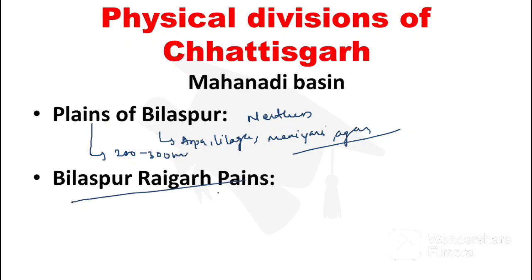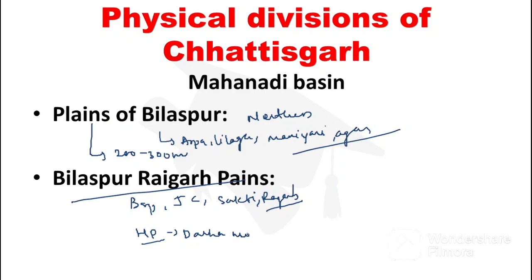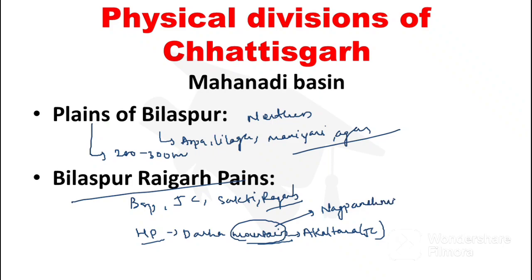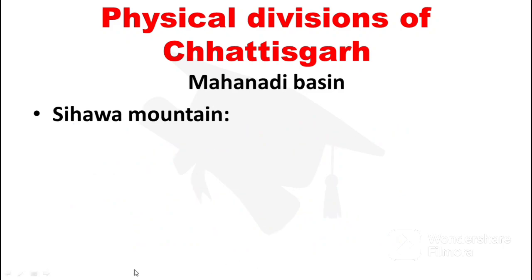Next, Bilaspur-Raigarh Plain covers Bilaspur, Changeur, Champa, Sakti, and Raigarh districts. The highest peak here is Dalha Mountain. Dalha Mountain is located in Akaltara, which is a town in Janjgir-Champa district. This question has been asked in previous year exams. Dalha Mountain is famous for Naag Panchami Mela celebrated here.